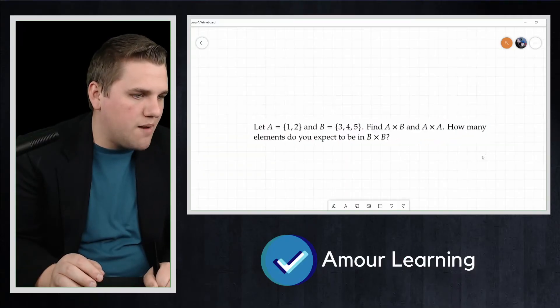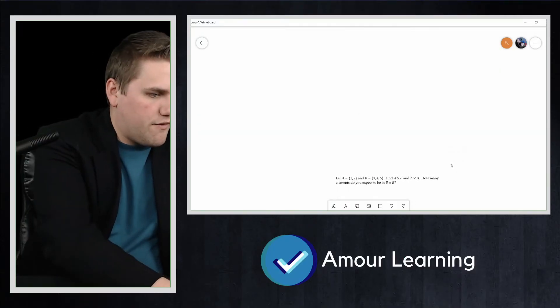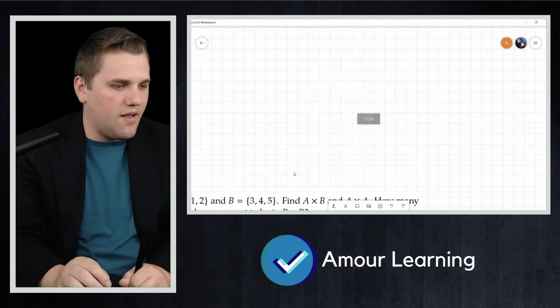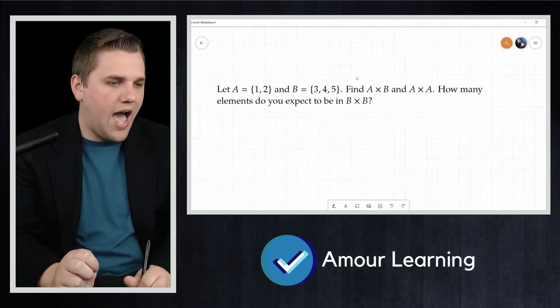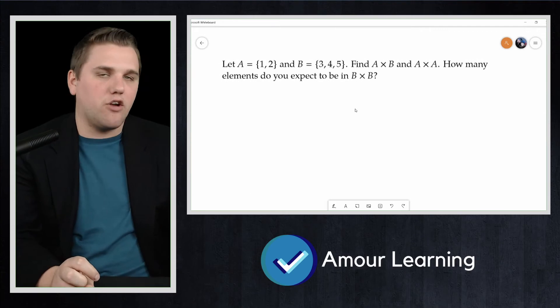So let A be {1,2} and B equal {3,4,5}. Find A cross B and A cross A. How many elements do you expect to be in B cross B?